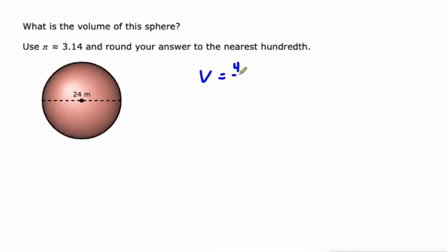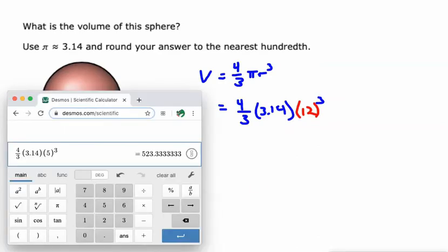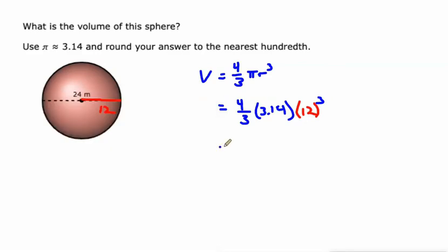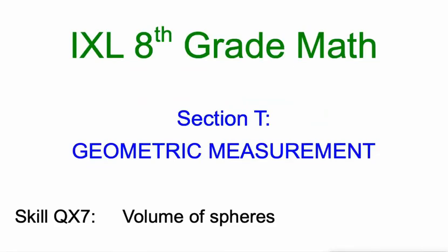Volume equals four thirds pi r cubed. So what are we going to use for radius this time? It is half of the diameter, which would be 12. All I got to do is go back here and change this radius to 12, and it's 7234.56 meters cubed on this last one. That's all there is to it — just got to know the radius and you can do it with the formula four thirds pi r cubed to find the volume of a sphere.